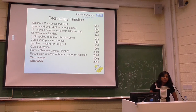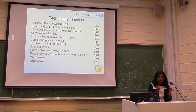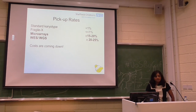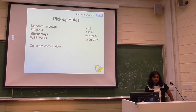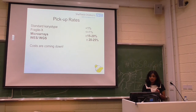Just briefly on the technology timeline: Watson and Crick first described DNA in the 1950s. In the last 60 to 70 years, genetics has moved on — initially quite slowly, but over the last decade quite rapidly. Now we talk quite a lot about microarrays, which is essentially a genome-wide scan, and then whole exome sequencing and whole genome sequencing, which has revolutionised our understanding of genes and genetics. In the good old days, we did a standard karyotype with a pick-up rate of less than 1%. Nowadays with microarrays it's roughly about 20%, and with whole exome or whole genome sequencing it's another quarter. The rates are increasing because our understanding is growing, and costs are coming down.